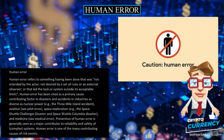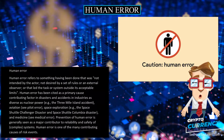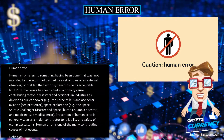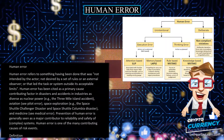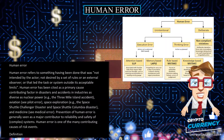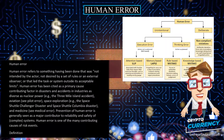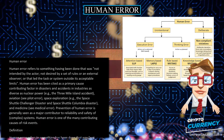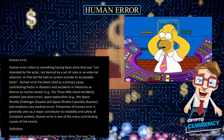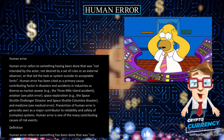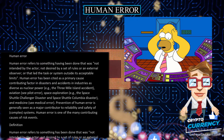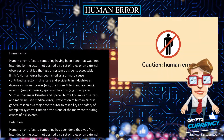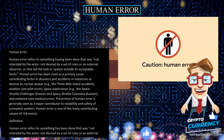Human error refers to something having been done that was not intended by the actor, not desired by a set of rules or an external observer, or that led the task or system outside its acceptable limits. Human error has been cited as a primary cause and contributing factor in disasters and accidents across many industries.